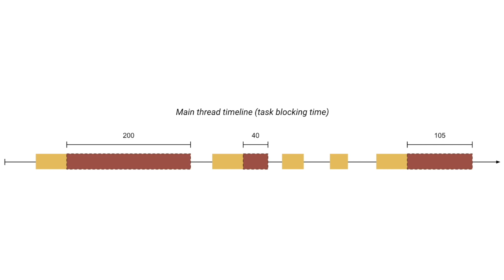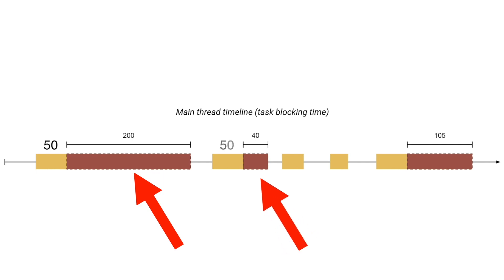The first task duration is 250 milliseconds, but the first 50 milliseconds won't be considered as blocking time. Hence, the blocking time in the first task is 200 milliseconds. Note that I mentioned the blocking time and not the total blocking time, which we'll discuss in a minute. The second task duration is 90 milliseconds, and if we remove the first 50 milliseconds, then the blocking time is 40 milliseconds.